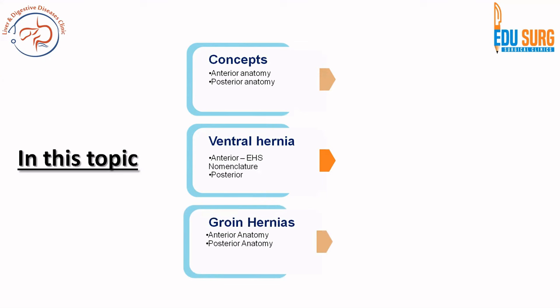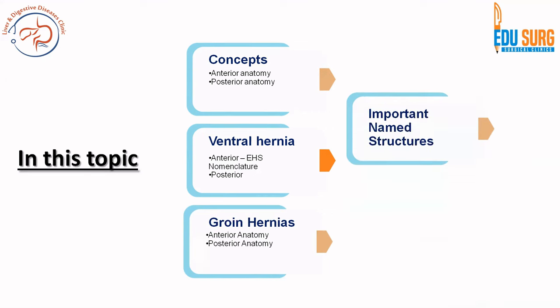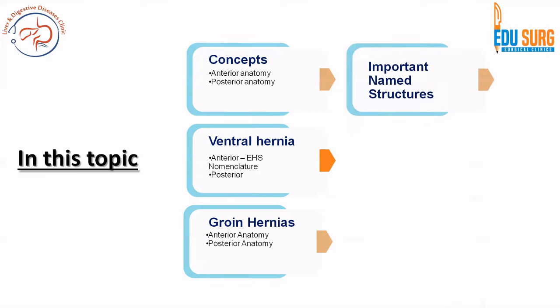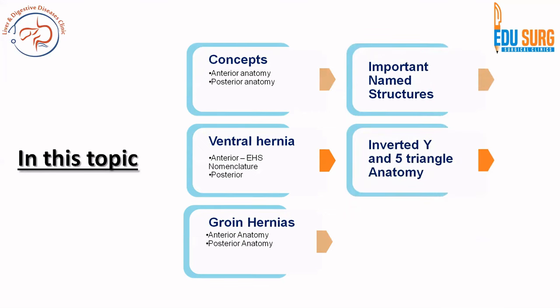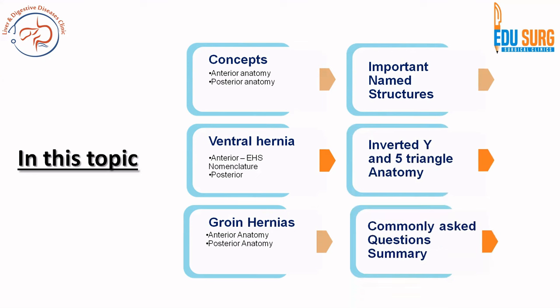We also saw the EHS nomenclature for ventral hernia and the umbilical anatomy from the posterior aspect. Today onwards we start the anterior and posterior anatomy of groin hernias, and it's going to be very interesting. We will discuss a lot of named structures, named spaces, and the Furtado's concept of inverted Y and phi triangle, which I feel is one of the best concepts for laparoscopic inguinal hernia anatomy.